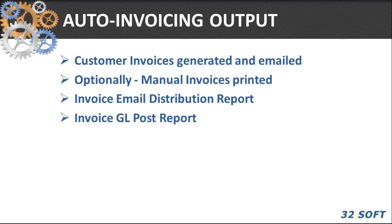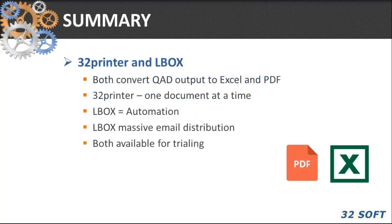The invoice GL post report is also attached. To summarize: 32 Printer and L Box both convert QAD reports to PDFs and Excel. 32 Printer is a desktop application — one report or document at a time — whereas L Box is an automation engine which routes documents massively via email. Due to the session format, we weren't able to show all the features, but if you're interested to explore more, both tools are available for trialing.